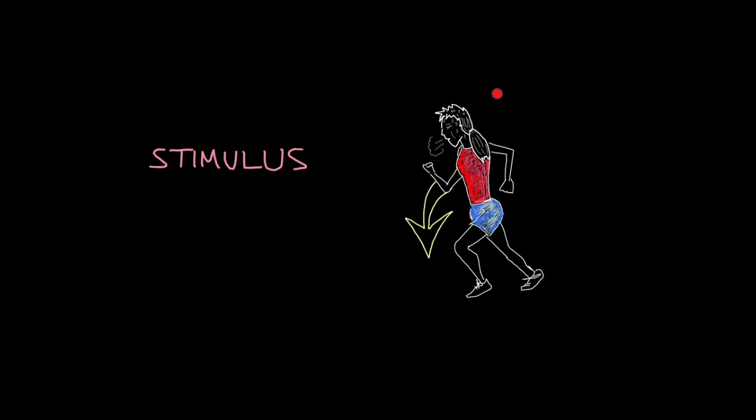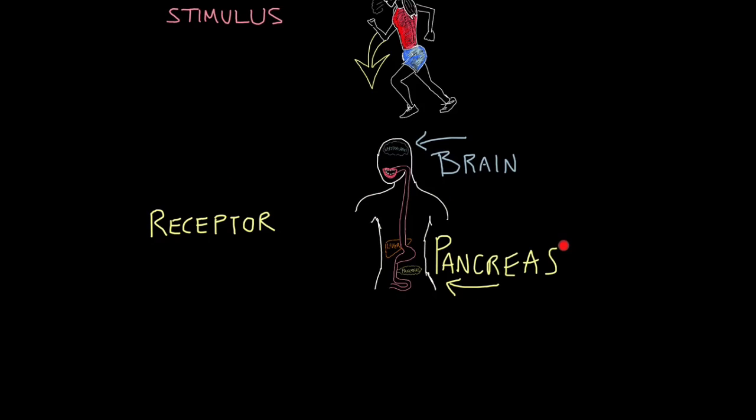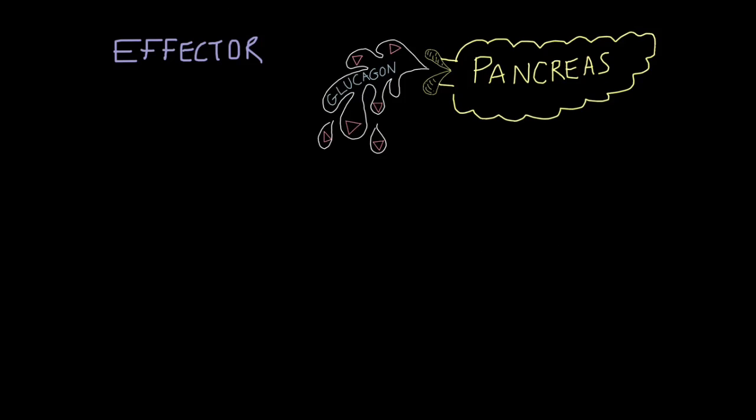So now let's see what happens when blood glucose levels fall. Let's say you've been doing exercise, using that glucose in respiration, so your blood glucose levels are going down. And if you're not careful, we could collapse as our glucose fuel runs low. Again, the pancreas is that receptor that detects the change in blood glucose levels. Once again, the pancreas is the effector, but this time it releases a different hormone called glucagon.